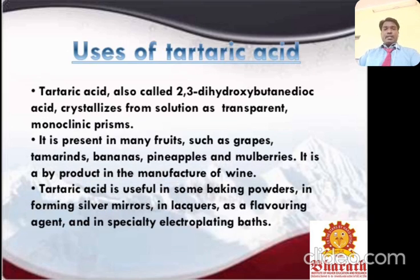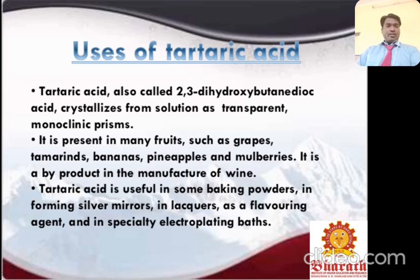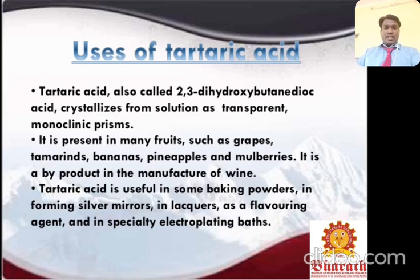Uses of tartaric acid: also called 2,3-dihydroxybutanedioic acid, it crystallizes from solution as transparent monoclinic prisms. It is present in many fruits such as grapes, tamarind, bananas, pineapples, and mulberries. It is a byproduct of wine manufacture. Tartaric acid is useful in baking powders, forming silver mirrors, lacquers, and as a flavoring agent, especially in soft drink products.